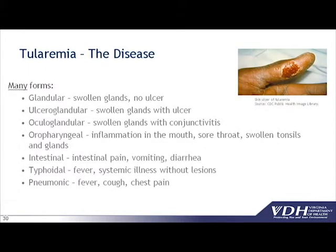Tularemia has multiple forms, and with any form you'd have a febrile illness — fever, chills, muscle aches, headaches, joint pain, weakness — and then different disease forms depending on how the organism enters your body. Classically you would have swollen glands and may or may not have ulcers on your skin. This does occur in the United States and in Virginia naturally. In the U.S. in 2011, there were 166 cases. In Virginia in 2012, we had two cases — both had rabbit contact. In 2011, we had a bigger year with six cases in Virginia.